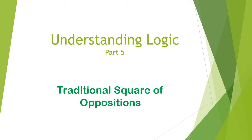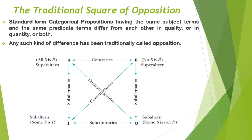Hello and welcome back. In this video, we are going to talk about the traditional square of oppositions. Here we are going to represent, with the help of a square, how the four types of categorical propositions are interrelated — what kind of relationship they have with one another. The relationship is one of opposition because these propositions differ in quality and quantity, or both.